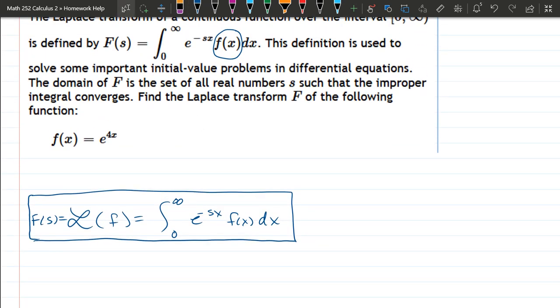Now there's another definition where you write L, and I use this cursive L here. L of e to the 4x equals integral from 0 to infinity, e to the negative sx. Now here is where our f(x), our particular f(x), is going to go. We have e to the 4x dx.